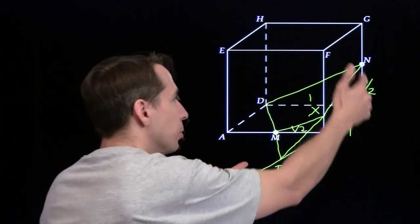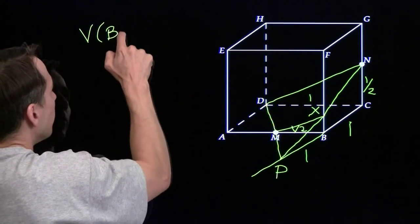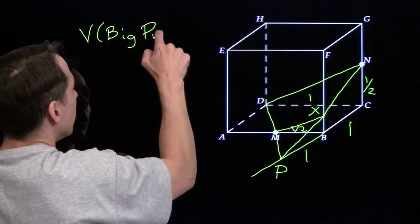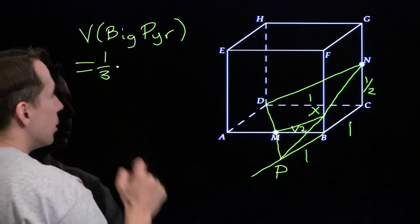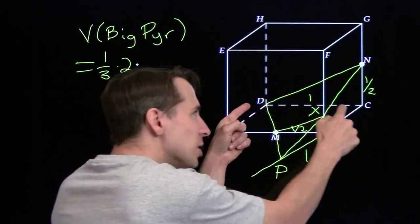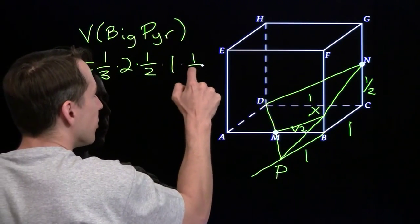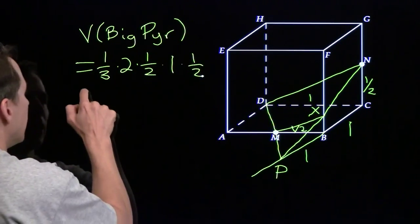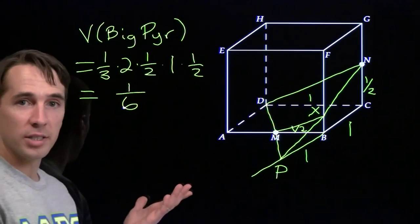And now we can find the volume of the big pyramid. The volume of the big pyramid is 1 third, times the height is 2, times the area of this back face, which is a right triangle with legs, 1 and 1 half. So we take half the product of the legs, multiply that out, and the volume of the big pyramid is 1 sixth.